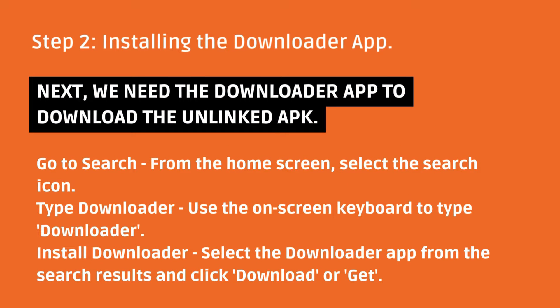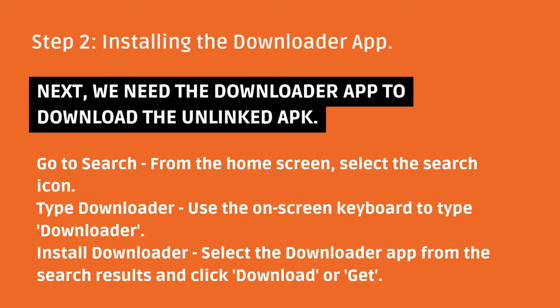Step 2: Installing the Downloader app. Next, we need the Downloader app to download the Unlinked APK. Go to Search from the home screen and select the Search icon. Use the on-screen keyboard to type Downloader. Select the Downloader app from the search results and click Download or Get.